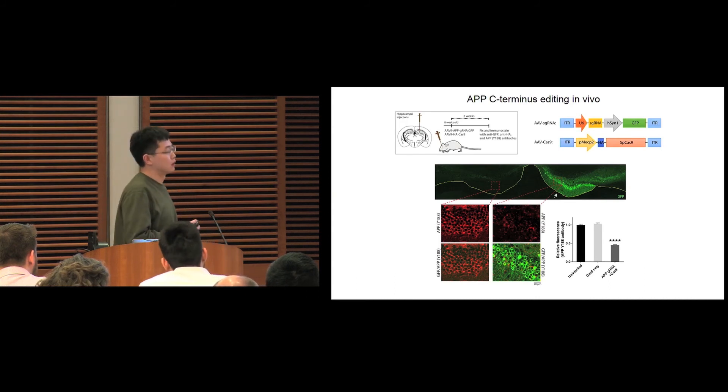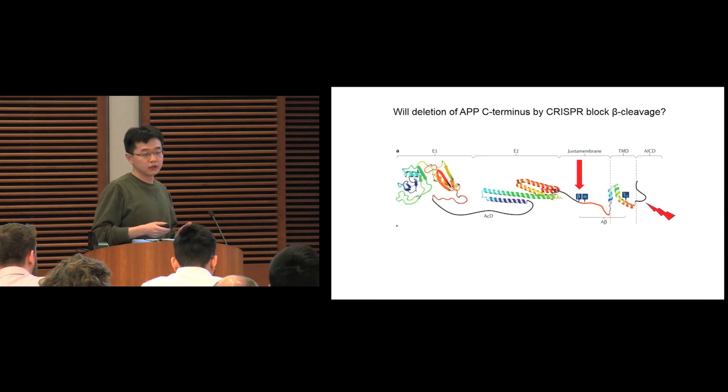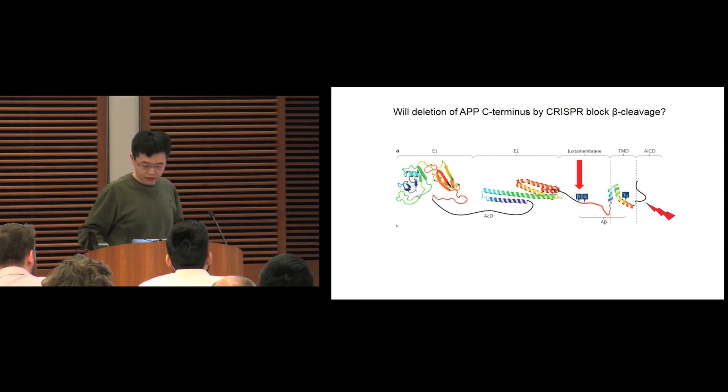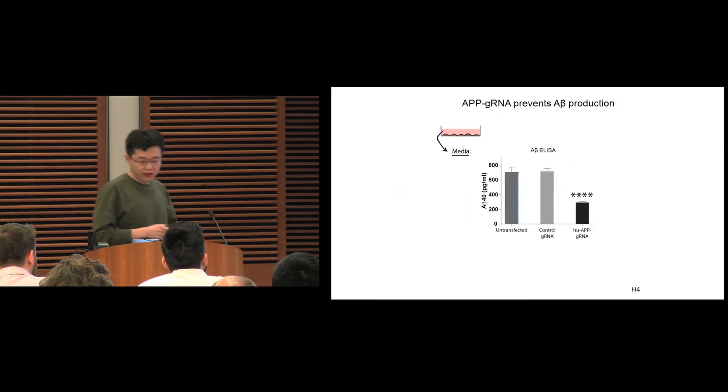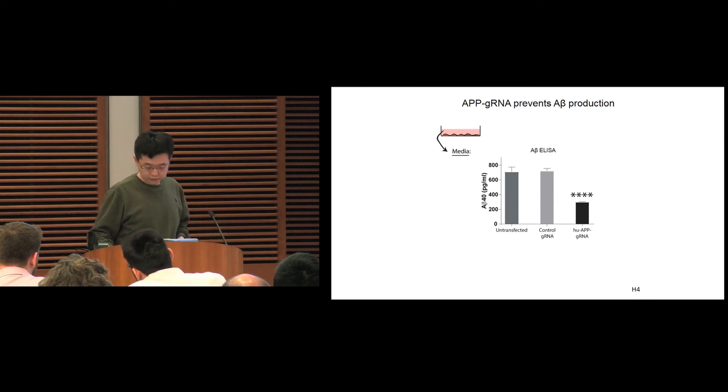Then we want to know whether this APP CRISPR can really block beta cleavage and A-beta generation, because the cutting site is very far away from the beta cleavage site. Here, we transfected cells with APP CRISPR, and then we measured A-beta secretion from the cell culture medium. The APP CRISPR can reduce A-beta secretion into the cell culture medium.